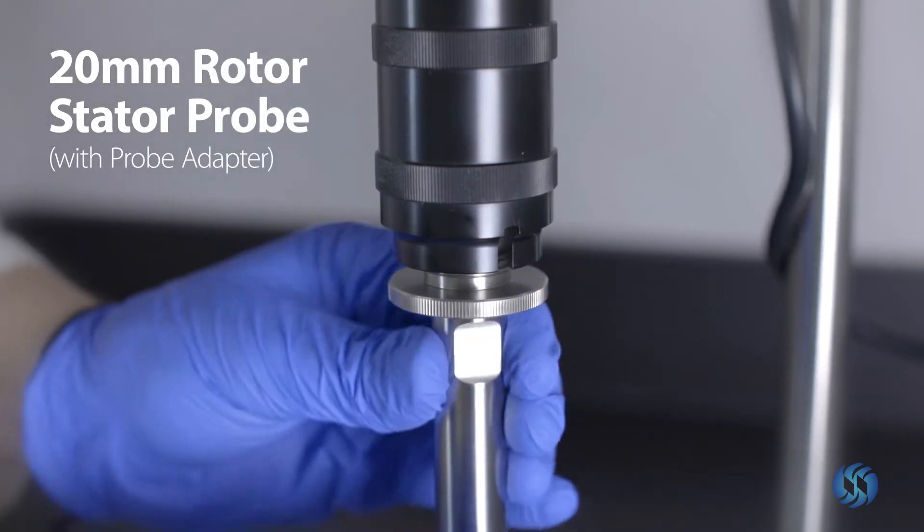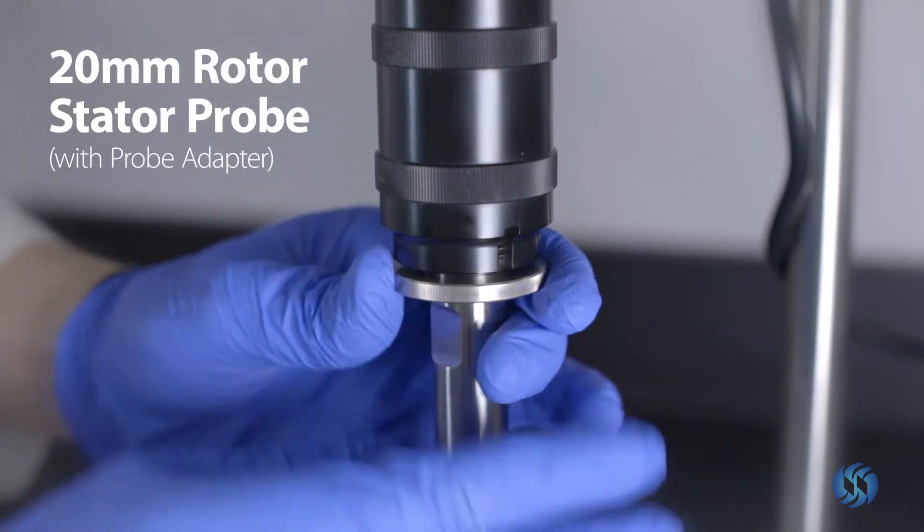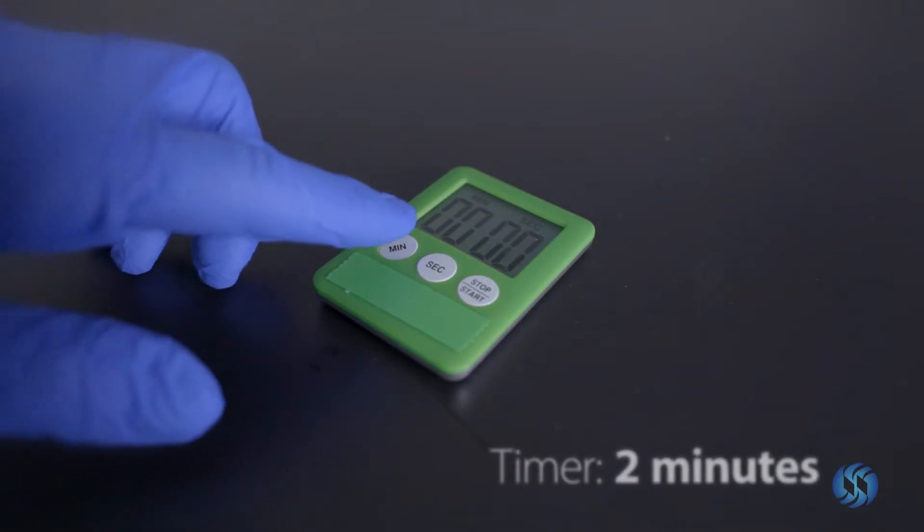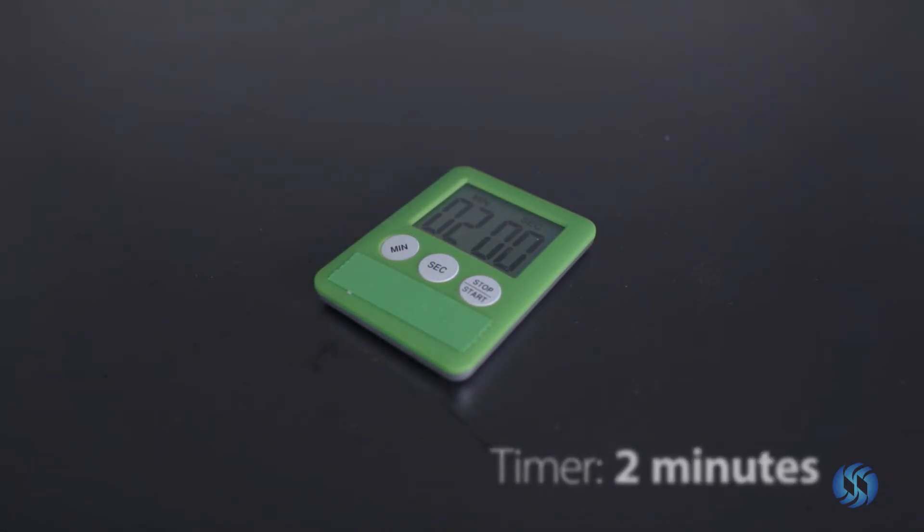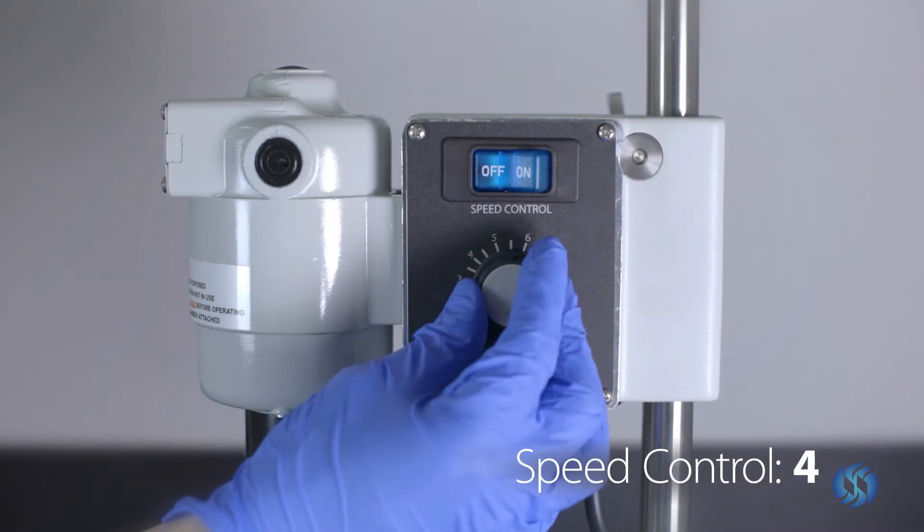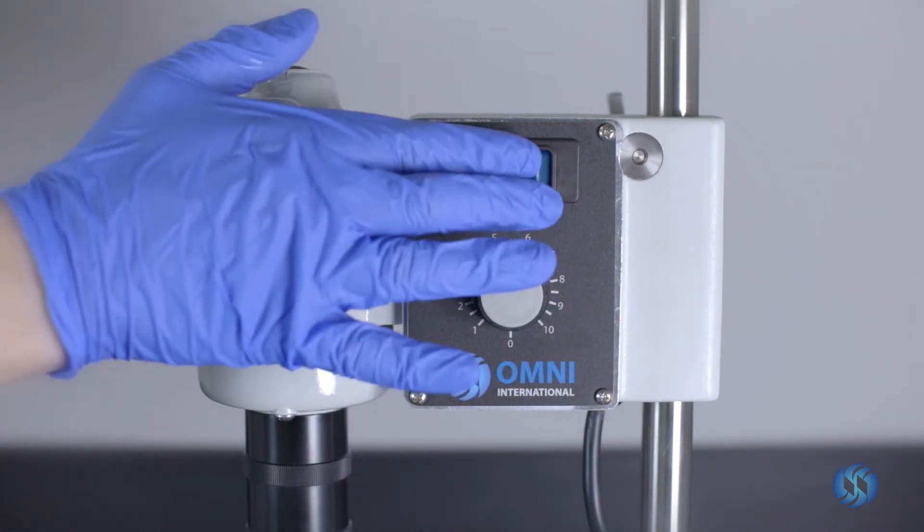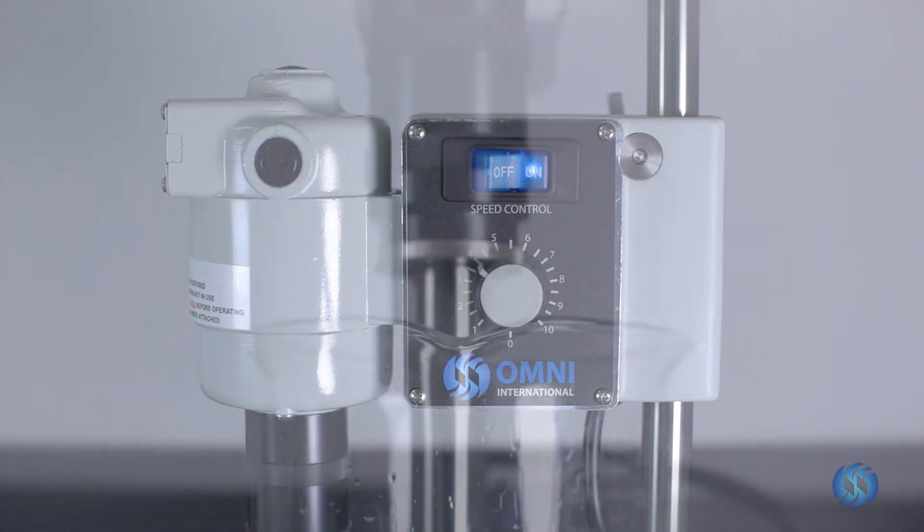Equip the Omni mixer with a 20 millimeter rotor stator probe. Set a timer for 2 minutes. Set the speed dial to 4. Press the ON switch to begin the processing cycle.